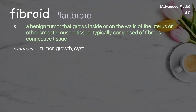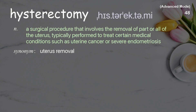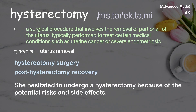Fibroid: a benign tumor that grows inside or on the walls of the uterus or other smooth muscle tissue, typically composed of fibrous connective tissue. The doctor found multiple fibroids during the patient's ultrasound examination. She hesitated to undergo a hysterectomy because of the potential risks and side effects.